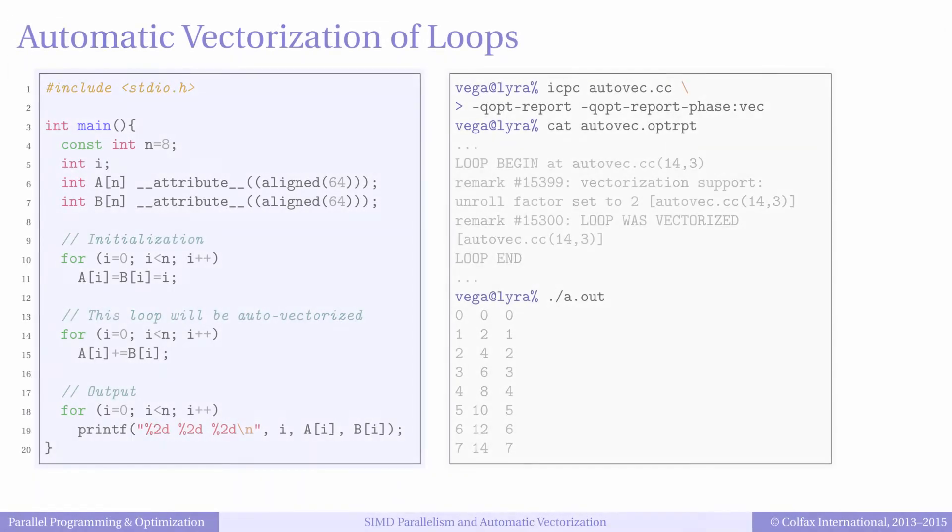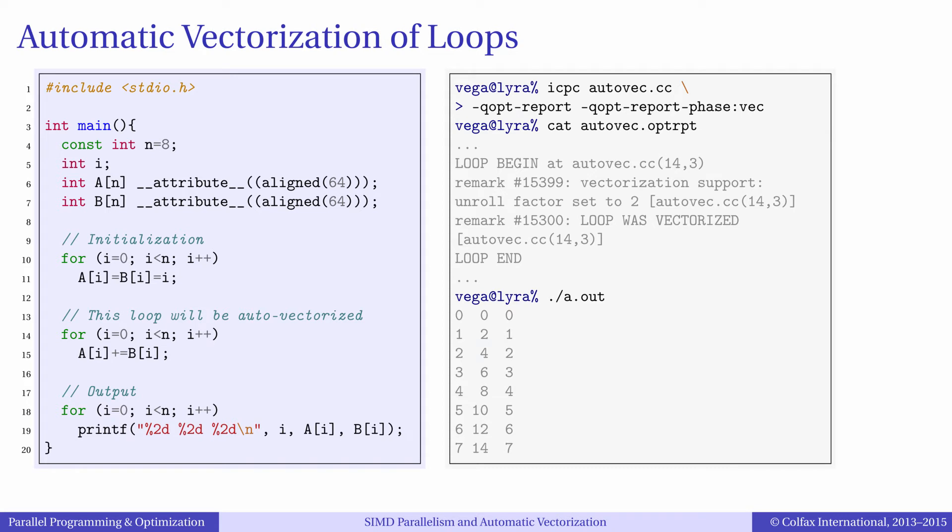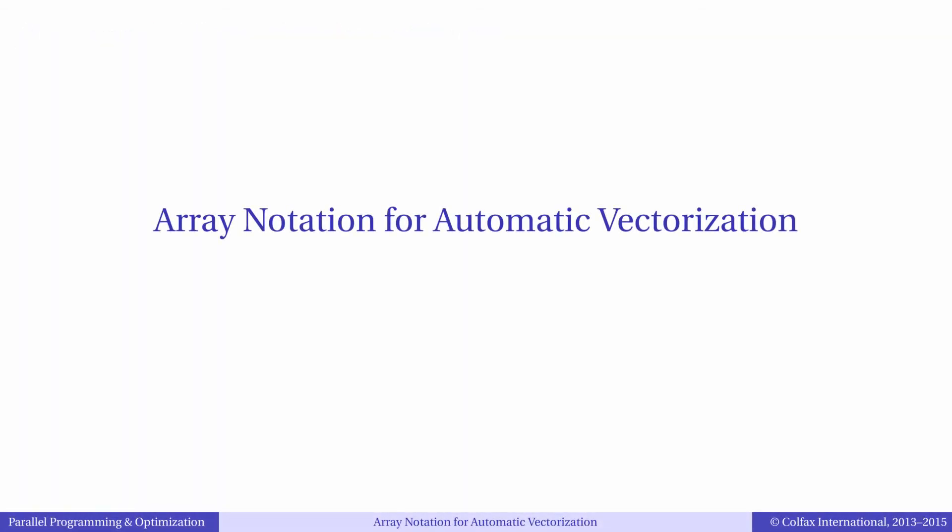So to summarize, we saw how loops in high-level languages with data parallelism can be automatically vectorized by the compiler. Besides loops, programmers have one more way to express opportunities for automatic vectorization to the Intel C, C++, or Fortran compilers. I'm talking about array notation.